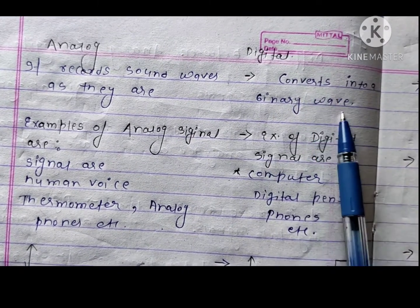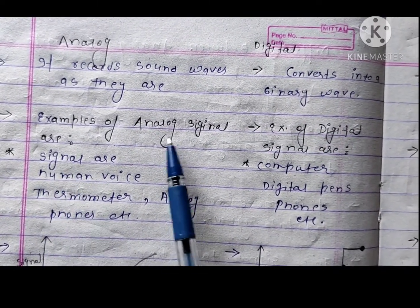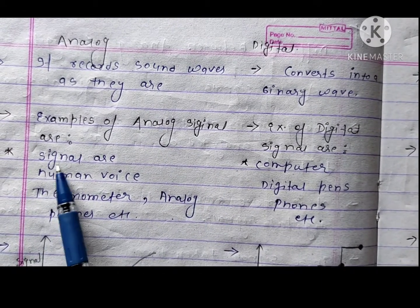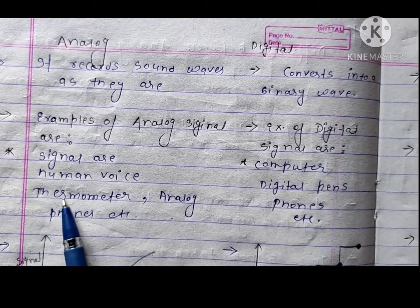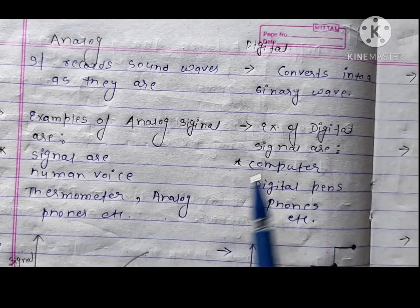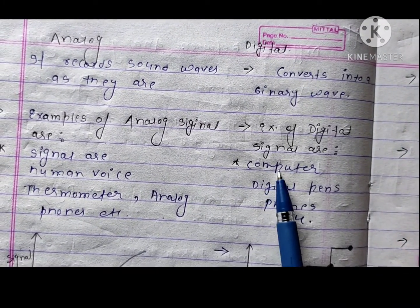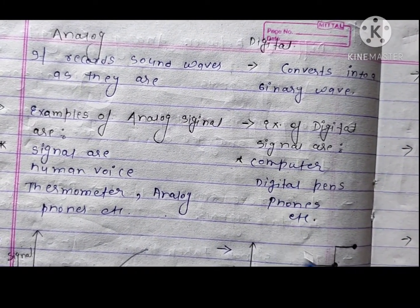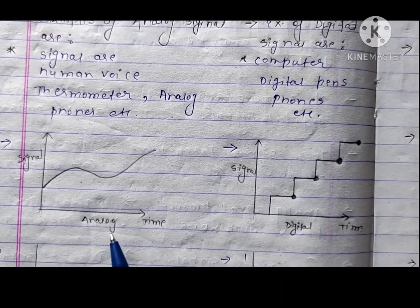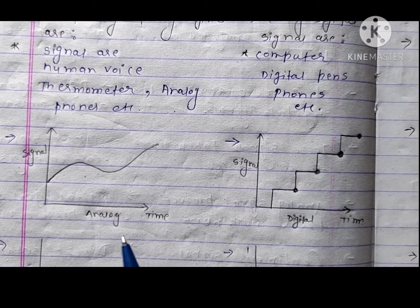Examples of analog signals are human voice, thermometer, analog phones, etc. Examples of digital signals are computers, digital pens, phones, etc.